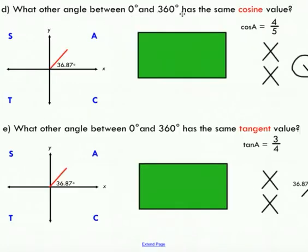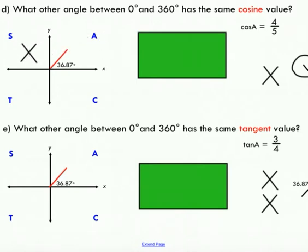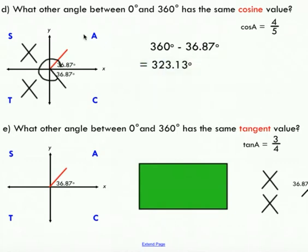What other angle between 0 and 360 degrees has the same cosine value? We use the CAST rule again. Since our cos of A is a positive number — 4 over 5 — the angle has to lie in either the first quadrant or the C quadrant (fourth quadrant), because cosine is only positive there. We rotate all the way around the unit circle, subtracting the 36.87 degree angle from 360 degrees, and we end up with a 323.13 degree angle. So these two angles are related — they share the same cosine value.